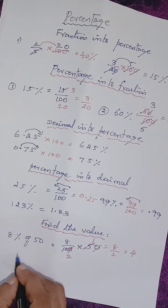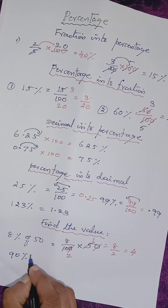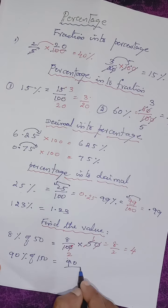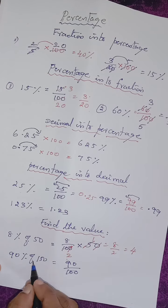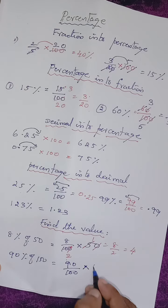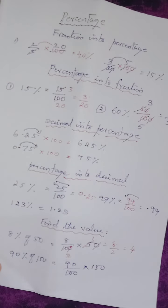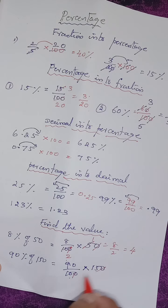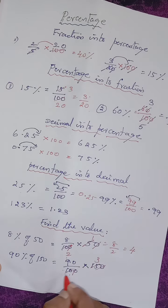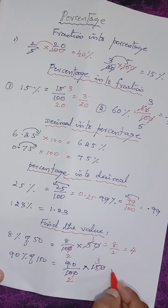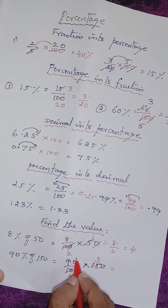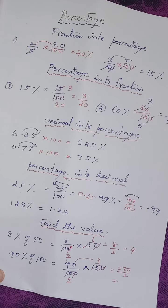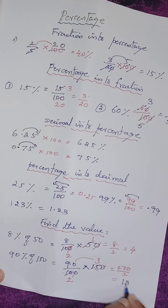Can we go through one more? How can we find 90 percentage of 150? Doing the same way — 90 percentage means write 90 by 100, 'of' means multiply, then write 150. Cancel the zeros. Then 15 and 10 can be cancelled in the 5th table: 3 fives are 15 and 2 fives are 10. We will be getting 90 into 3, so 270 by 2. What is 270 by 2? The answer is 135.